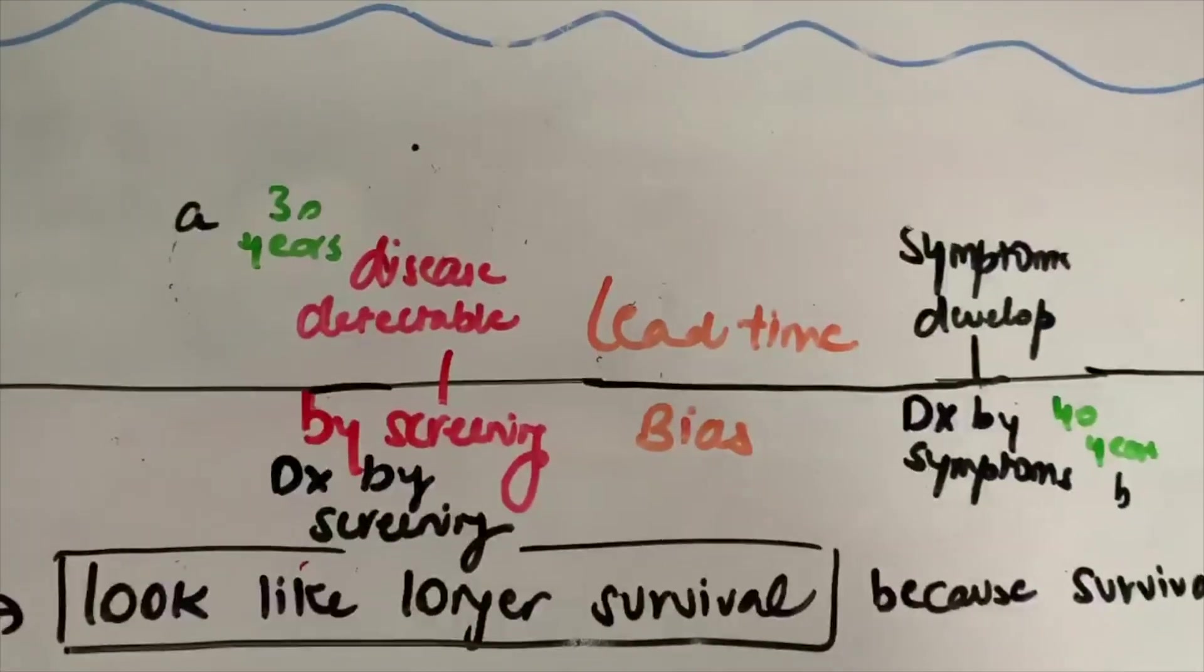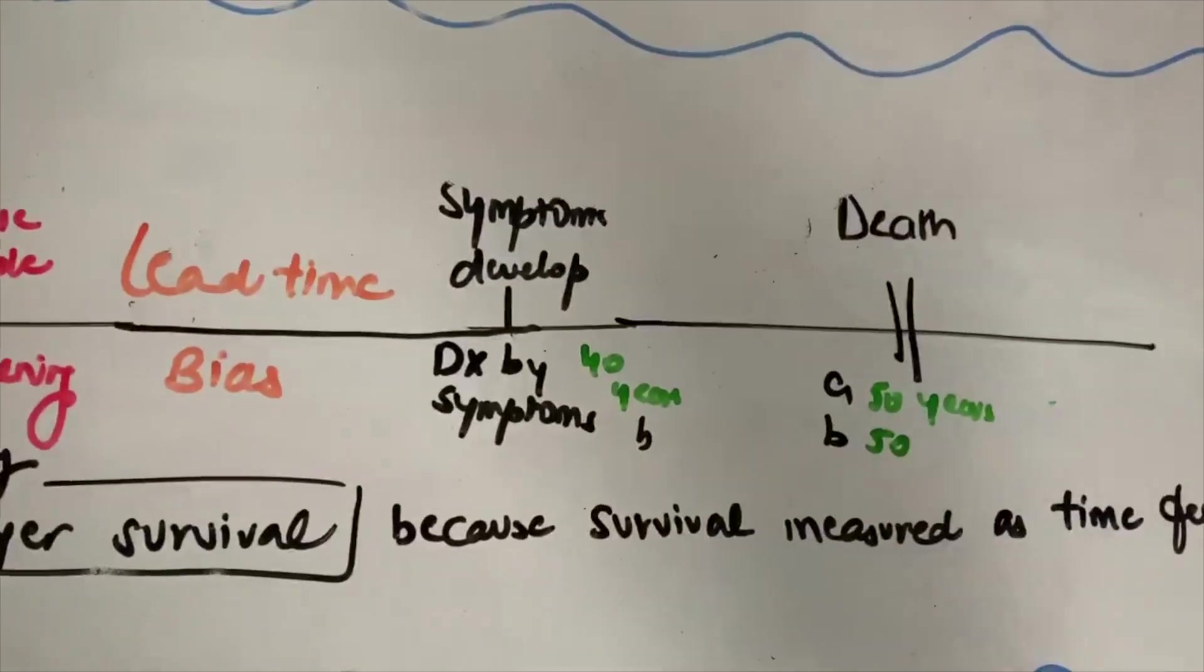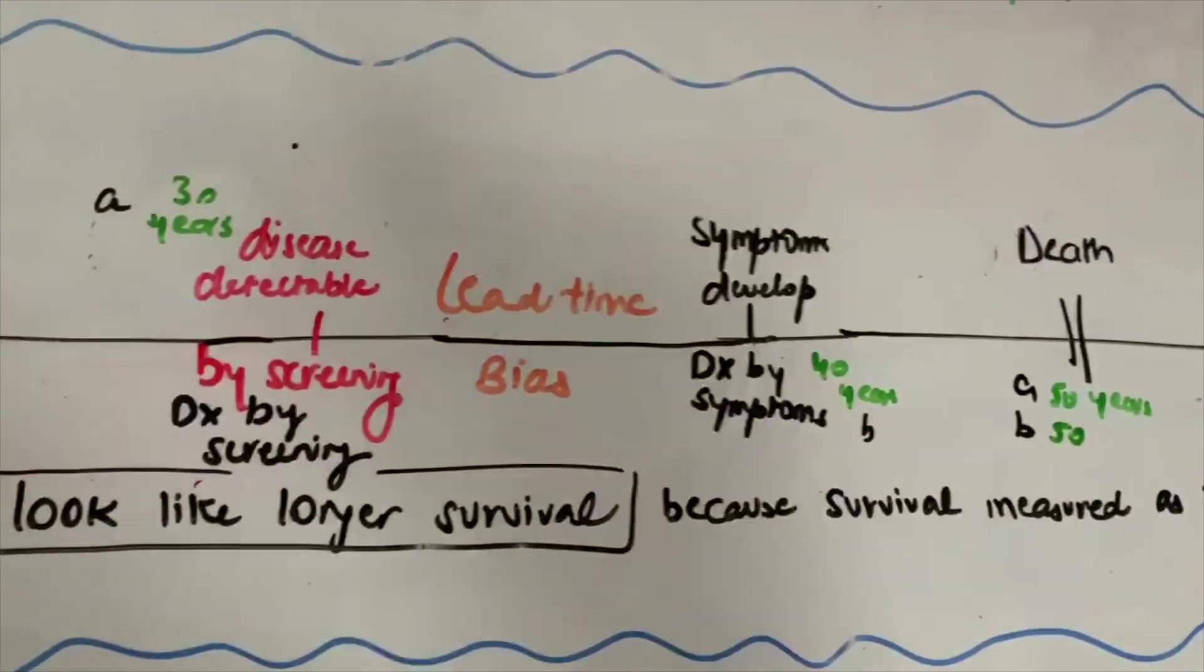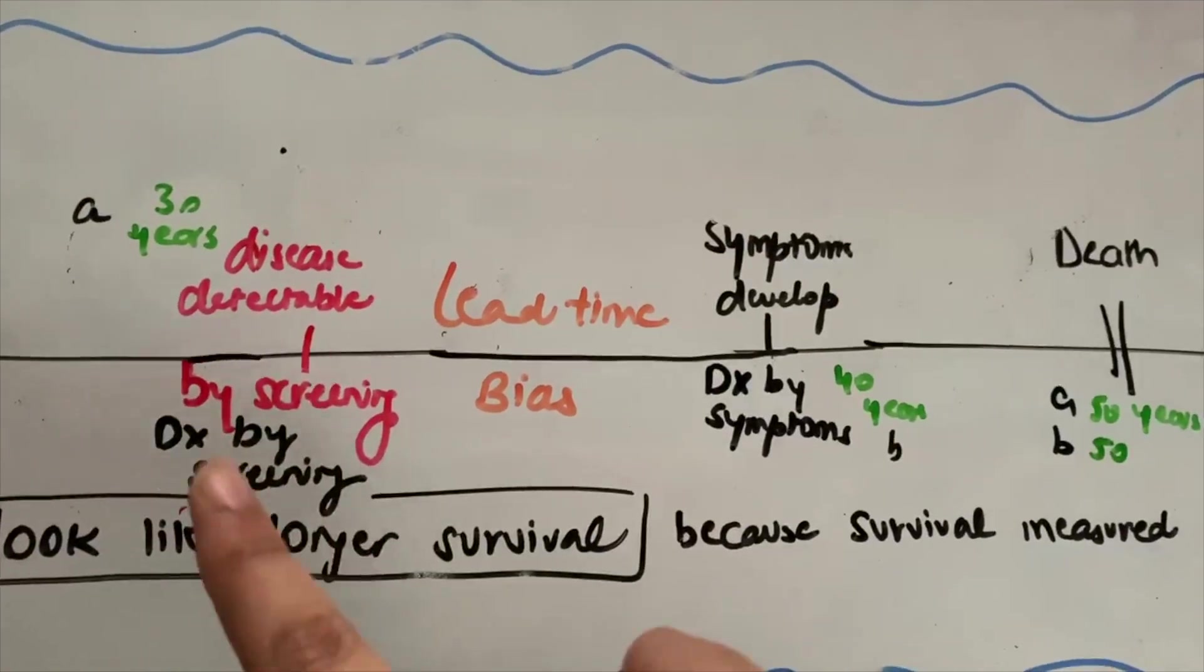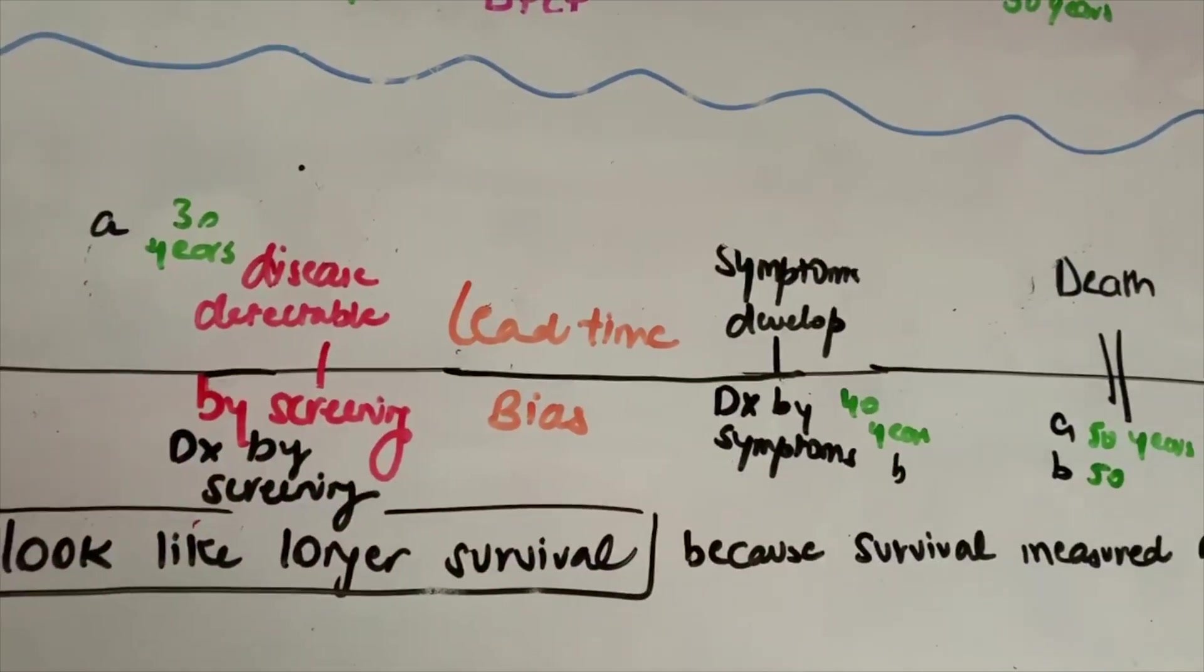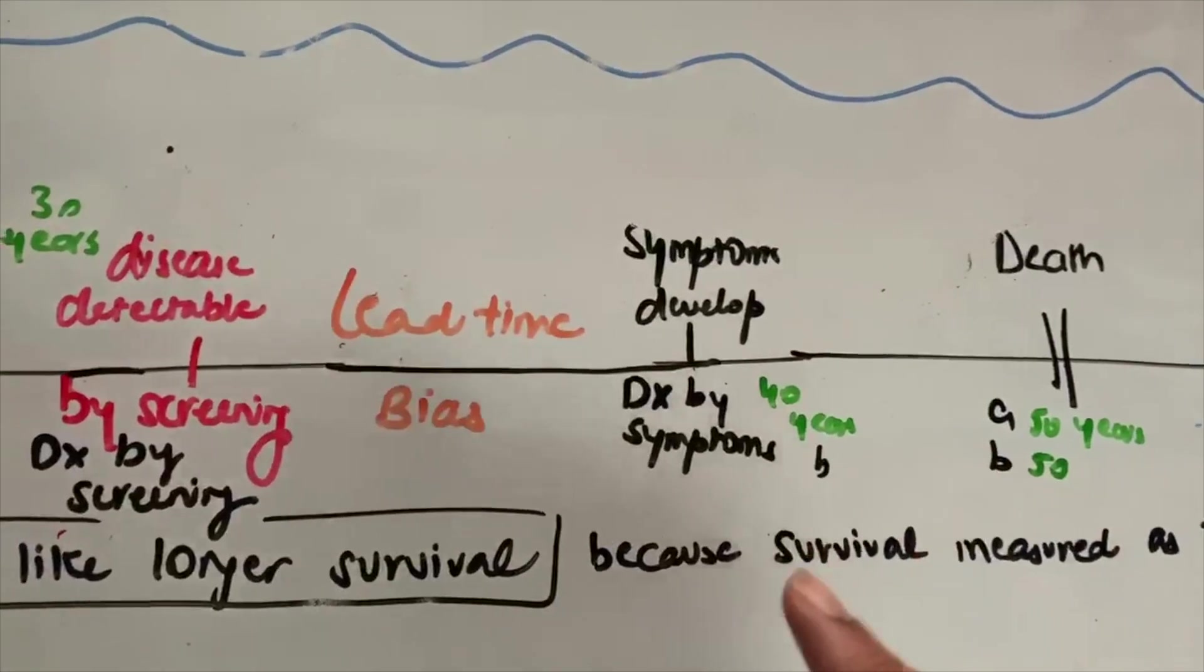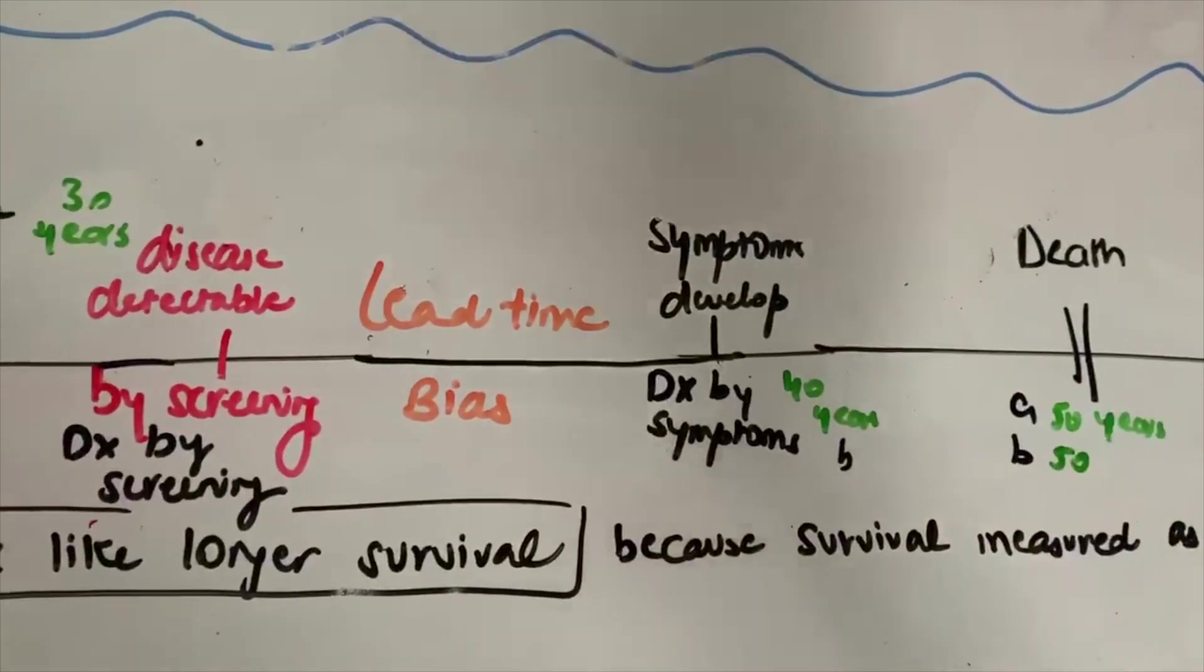So lead time bias is basically like you have two people—let's say both of them died at the age of 50 from lung cancer. The first one, A, got diagnosed with lung cancer when he had a routine screening test at the age of 30, like he had a chest x-ray and they found a nodule in his lung. And the second person, B, got diagnosed with the disease at age 40 from a symptom like cough.